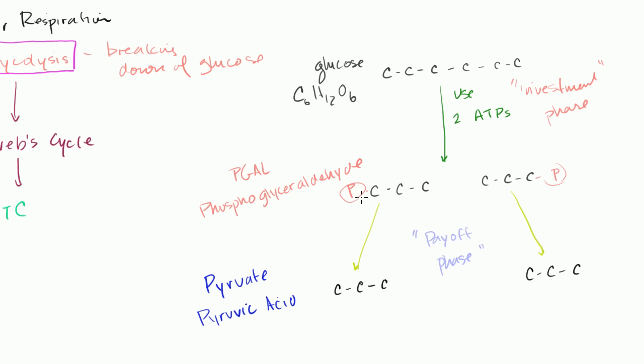But this is the payoff phase right here. And so when we go from the phosphoglyceraldehyde to the pyruvate or the pyruvic acid, we produce two things. Or I guess we could say we produce three things. We produce each of these, each of these PGALs to pyruvates produce two ATPs. So I'm going to produce two ATPs there. I'm going to produce two ATPs there. And then they each produce an NADH.